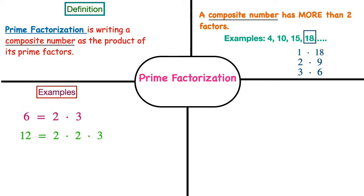Now let's take a look at the number 12. This one looks a little different — we don't have just two factors, we actually have three. The number 12 has three prime factors, and if I multiply those prime factors together I get 12. Starting from left to right: 2 times 2 gives me 4, and 4 times 3 gives me 12. So the three prime factors of 12 are 2 times 2 times 3.